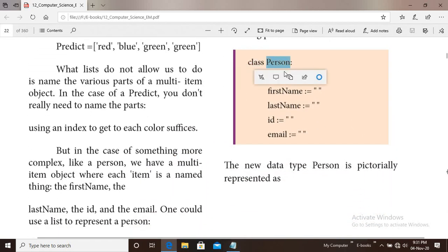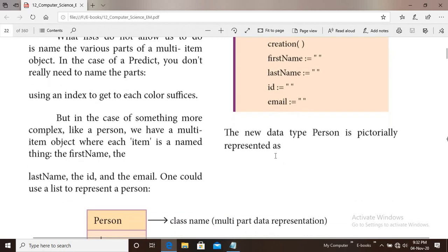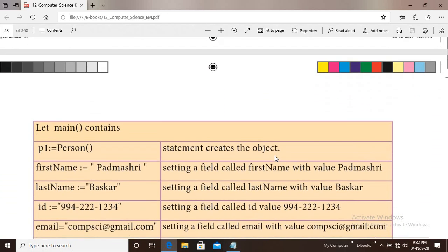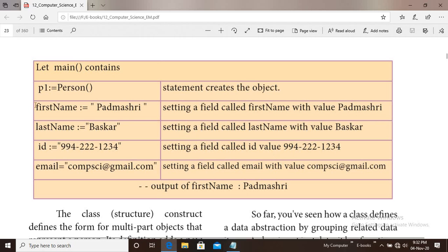For this problem, instead of using a list, you can use a structure. In object-oriented programming language, it is called a class. Classes allow multiple part objects where each part has a name. For example, there is a class name, Person. Inside the class, there are variables: first name, last name, ID, email. First, we create an object to the class. If we use P1 as the object name, P1.firstName, P1.lastName, P1.ID, P1.email.